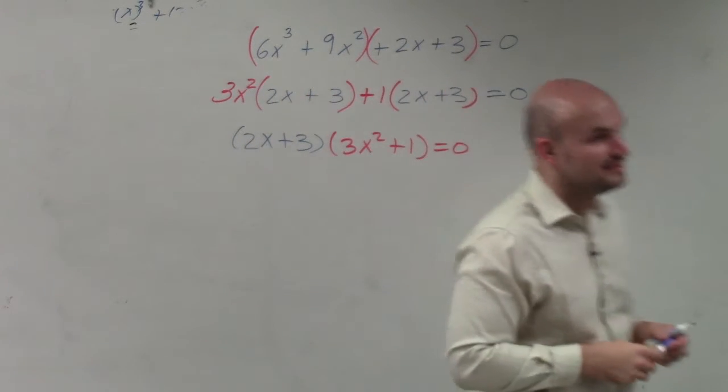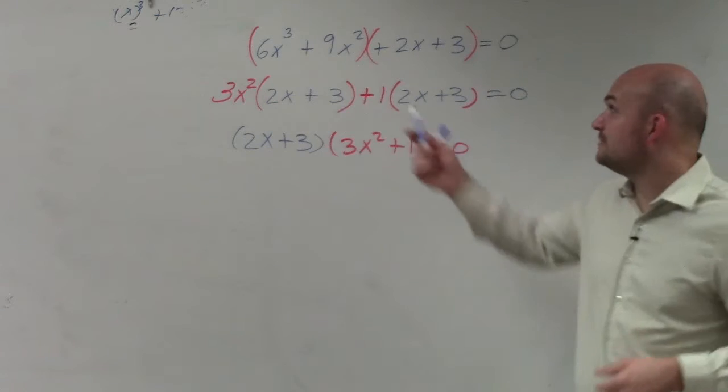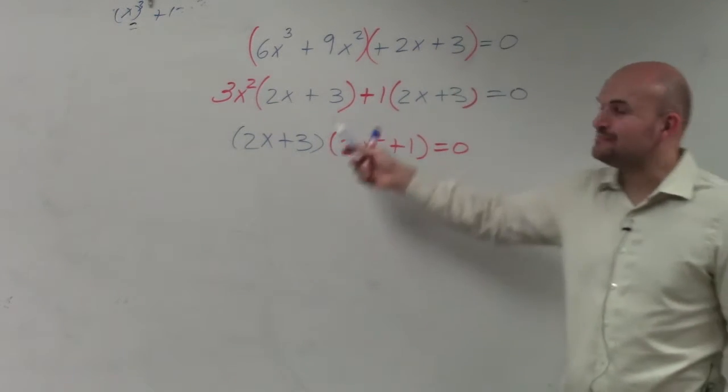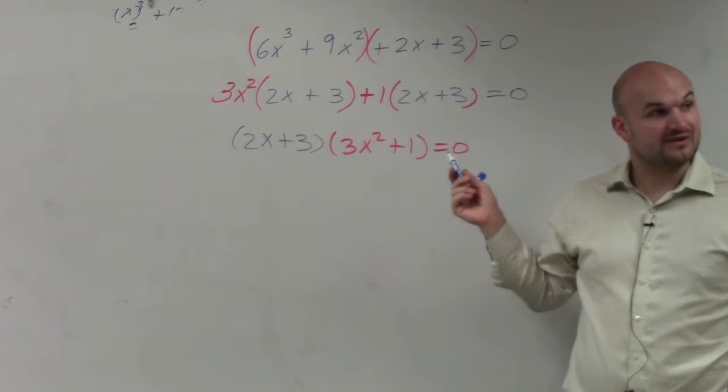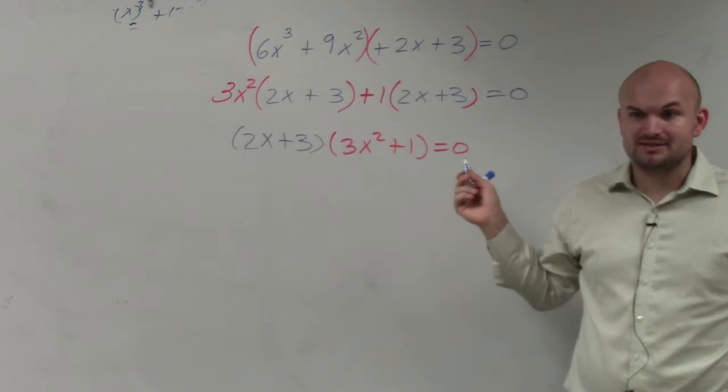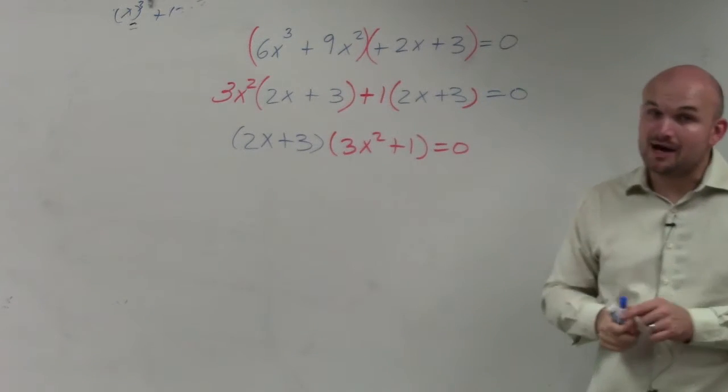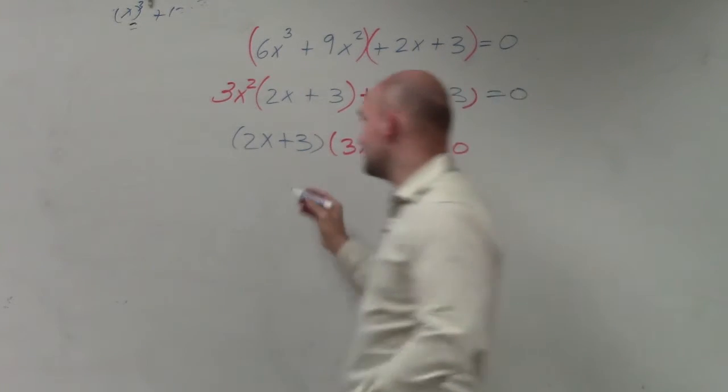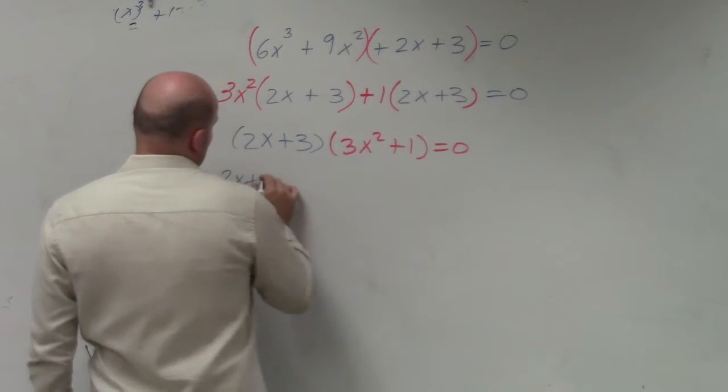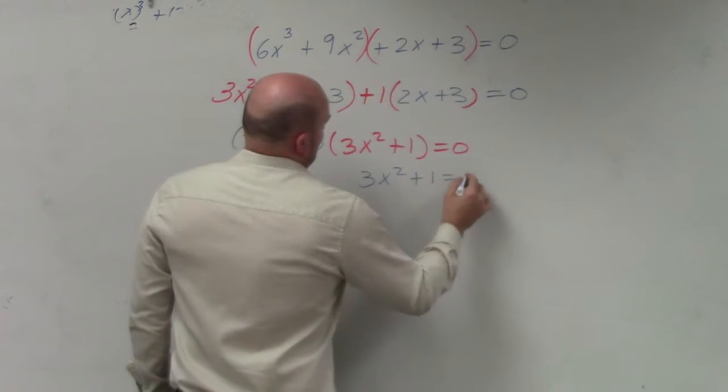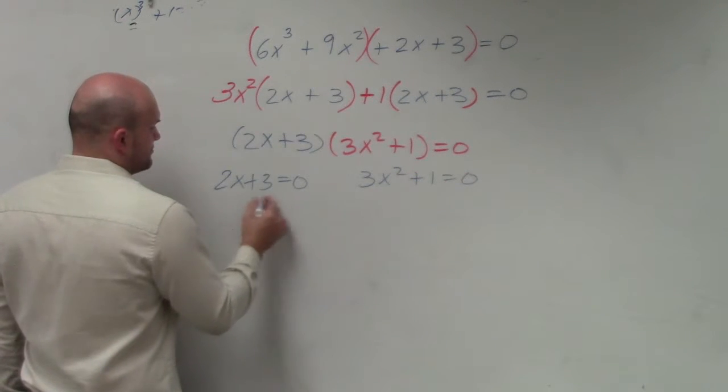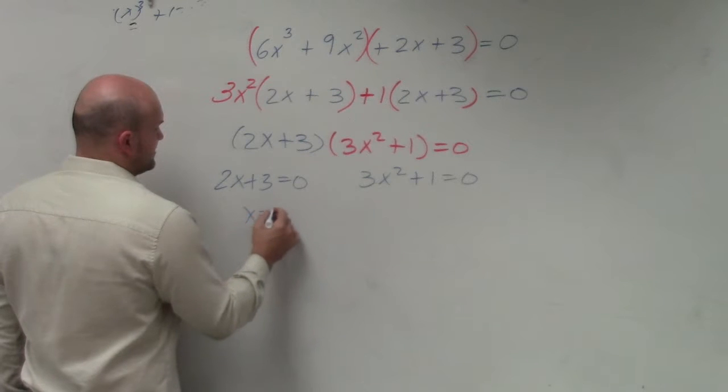So now we have rewritten this expression as a product equal to 0. That's very nice. Now we have a product equal to 0. So therefore, now we can apply the zero product property. So you set both of them equal to 0. Therefore, subtract 3, divide by 2, x equals negative 3 halves.